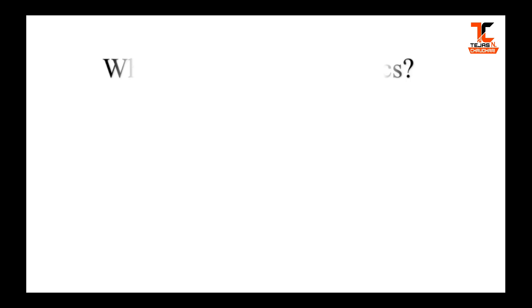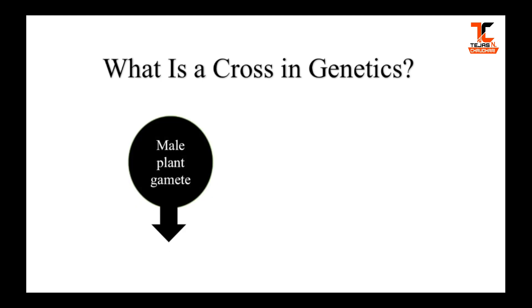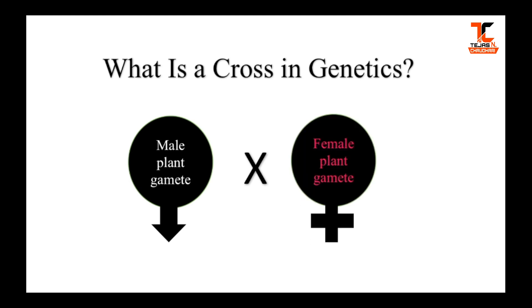The next important thing is types of crosses performed by Mendel, but first we should know what a cross is. A cross is nothing but the reproduction process carried out by fusion — that is, mixing of male plant gametes with female plant gametes. This is done artificially inside a laboratory, and the whole process is called a cross.